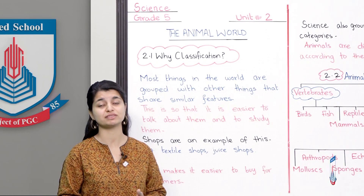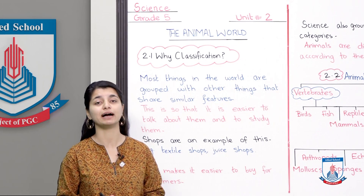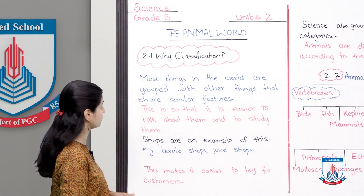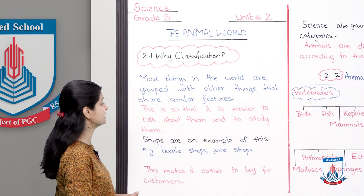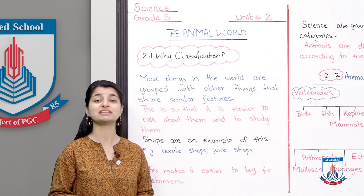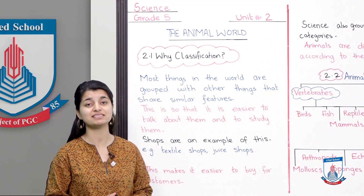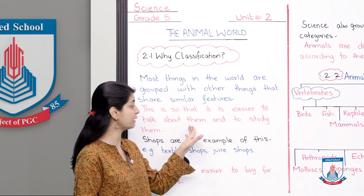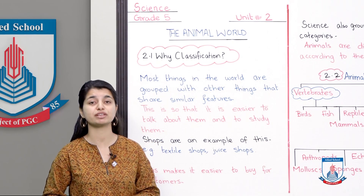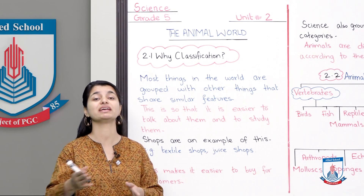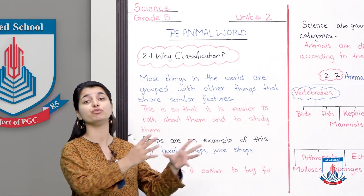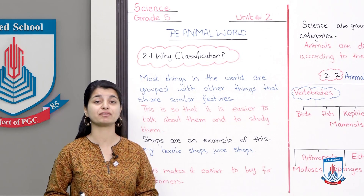So let's start 2.1: why we classify. Most things in the world are grouped with other things that share similar features. This makes it easier to talk about them and to study them. Instead of studying one individual at a time, when you put them in a group - for example, that humans behave like this and birds behave like this - it becomes very easy to talk about and understand them.